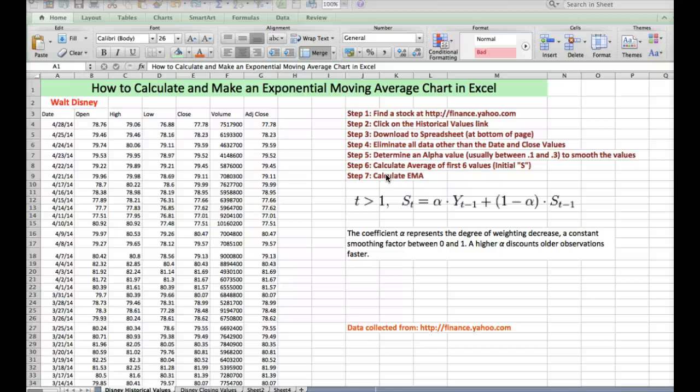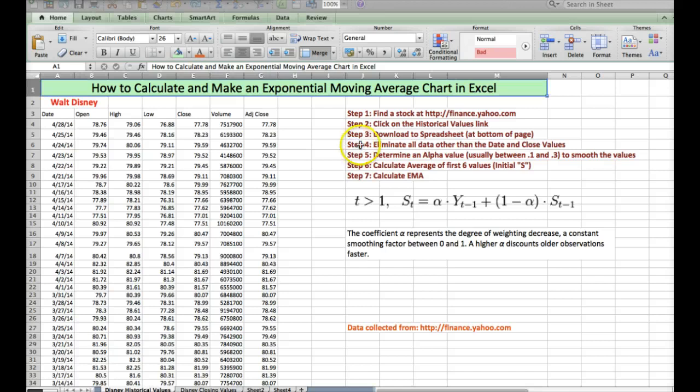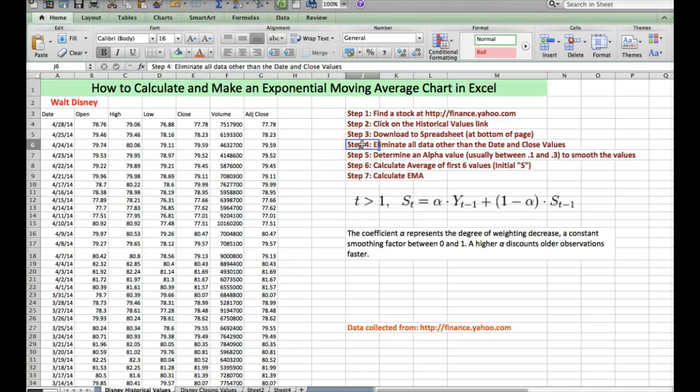All right, so let's look at step one. Find a stock. We did that. Click on the historical values link. We did that as well. And then step three, download to a spreadsheet. That's where we are now. All right, so step four, eliminate all data other than the date and close values. So this is an important step. We don't care about the open, the high, or the low, or the volume, or the adjusted close. We just want the close values.